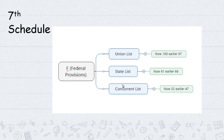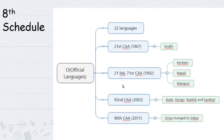The Seventh Schedule is important for questions on cooperative federalism and federal provisions. The Eighth Schedule covers official languages - currently 22 languages. Originally, the Constitution had fewer languages listed.